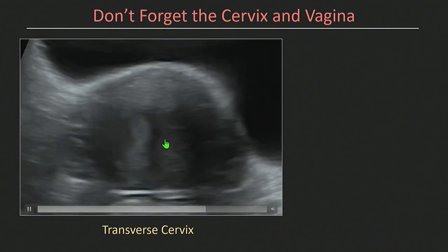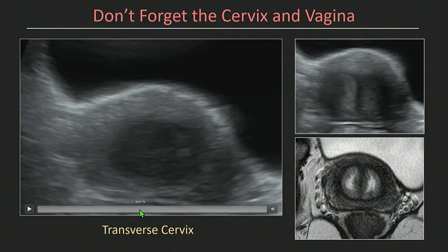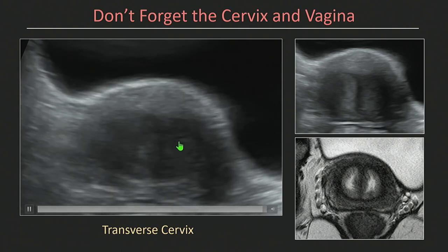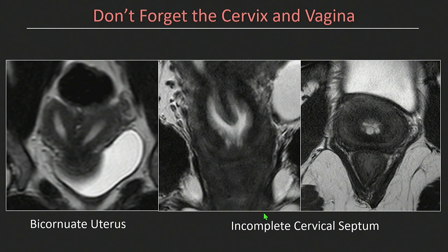Don't forget the cervix and the vagina — you can often find septa or duplication of the cervix. In this case of a bicornuate uterus, as we scroll through, there's a band between the cervix — here it is on MR. This patient with a bicornuate uterus was undergoing IUI. The septum in bicornuate uteri often does not extend to the external os, so on exam you only see one external cervical os. But if they're undergoing IUI, you'd like to know where you're going, because in fact there are two separate cervical canals — a potential pitfall for IUI.